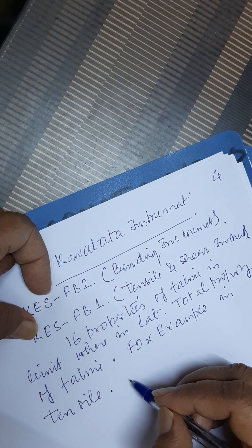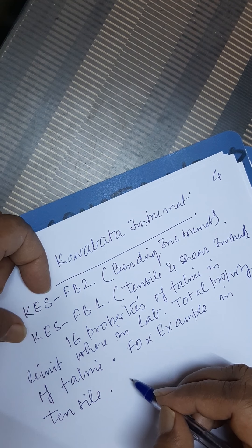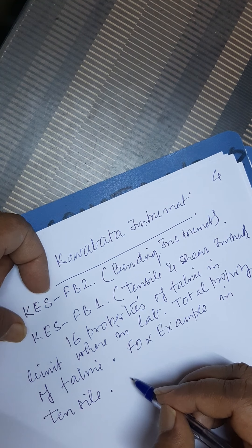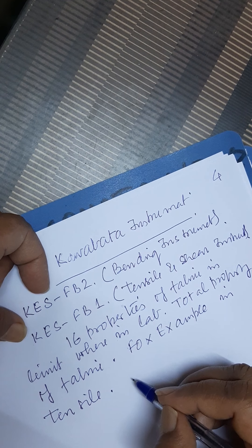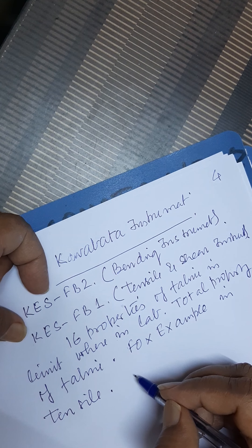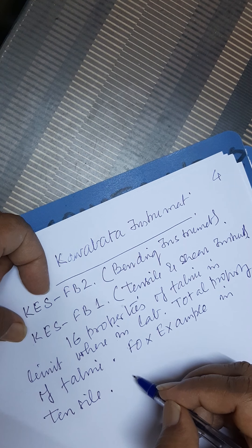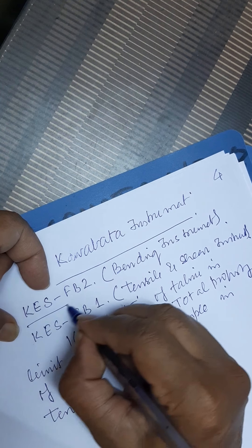In this way the 16 properties are studied using Kawabata instruments, and all properties are taken by 4 instruments: KESFB1, KESFB2, KESFB3, and KESFB4. All the properties are fed to the software and we get the fabric rated as very good, good, normal, or poor. So today I will discuss about KESFB2.